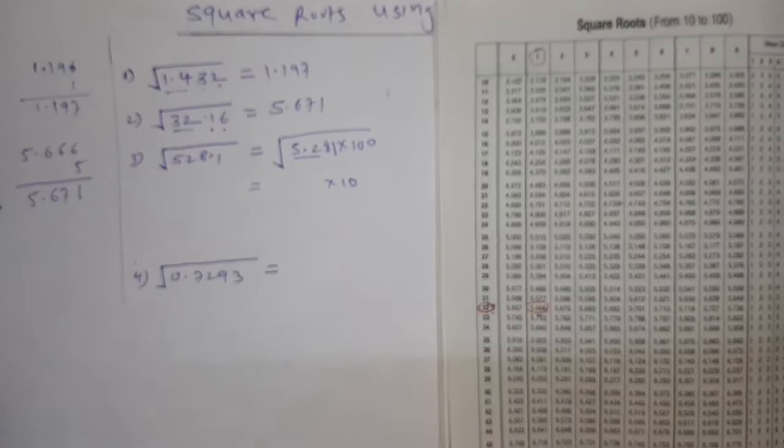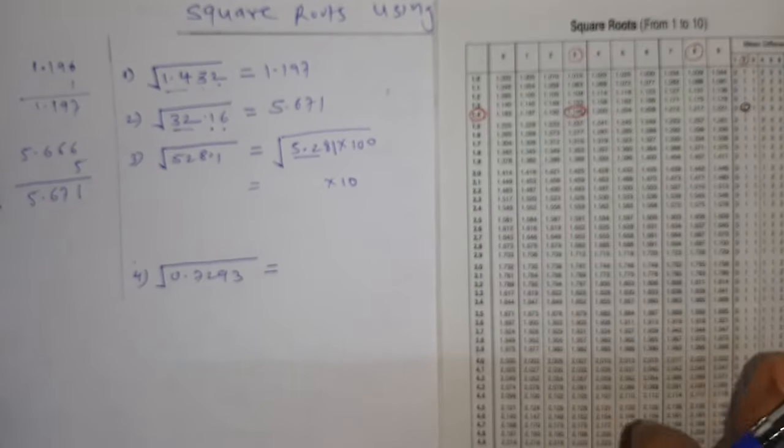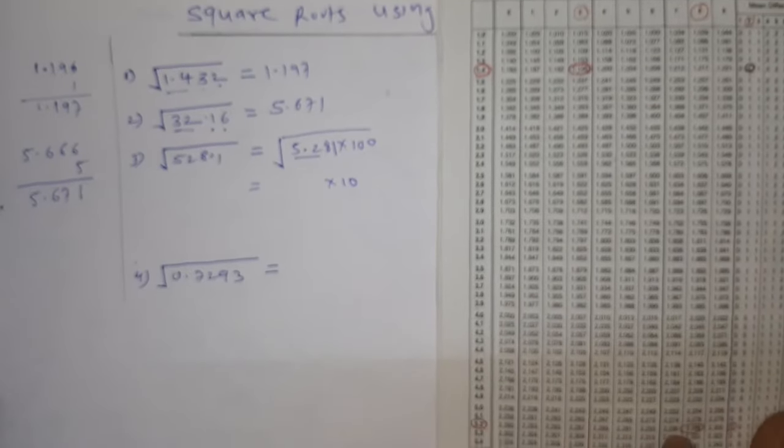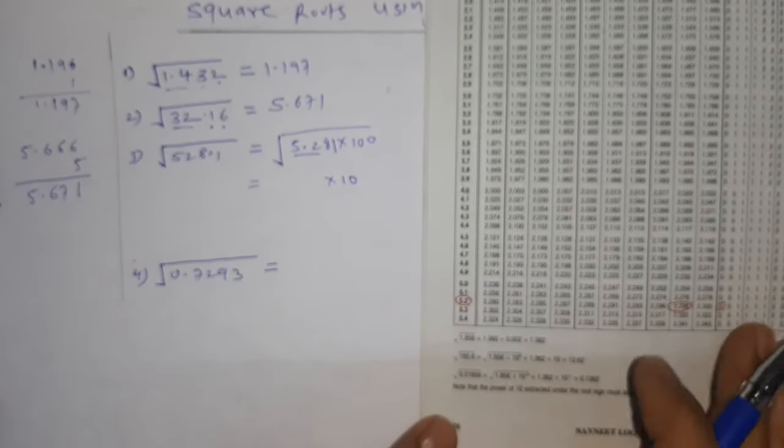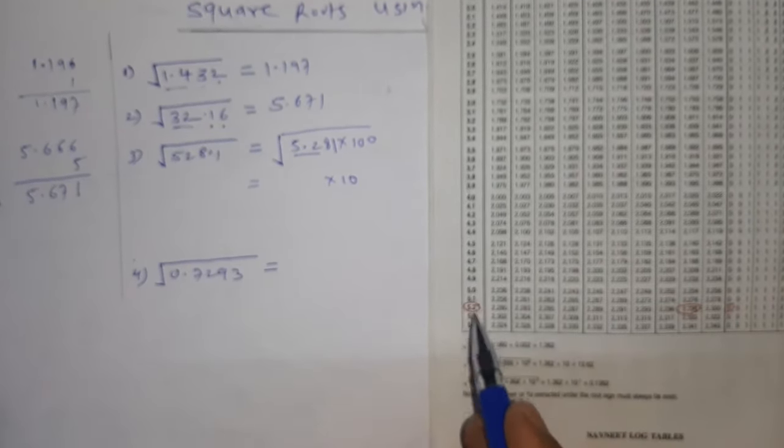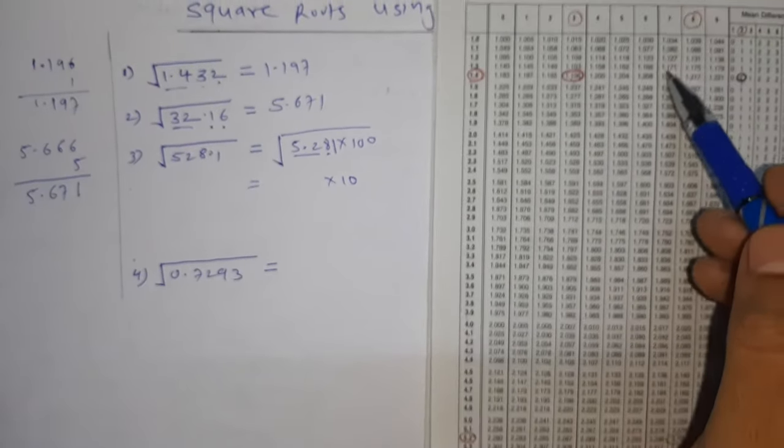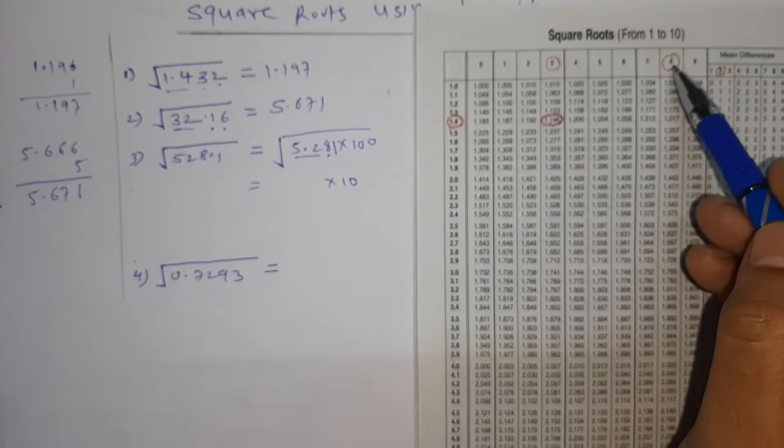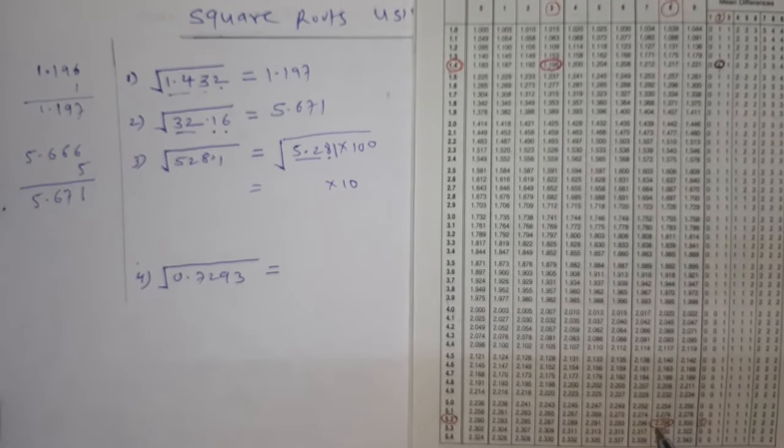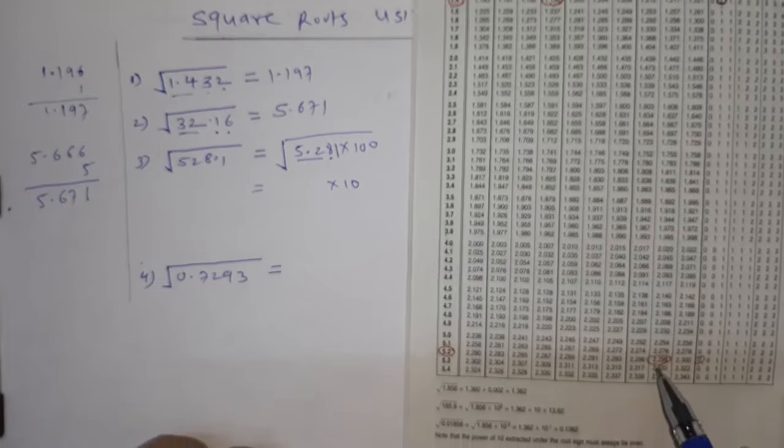Now we have to see 5.281. First two digits 5.2. Where is 5.2? In my square root, 5.2, I'll get here. Third digit 8, I'll see here 8.